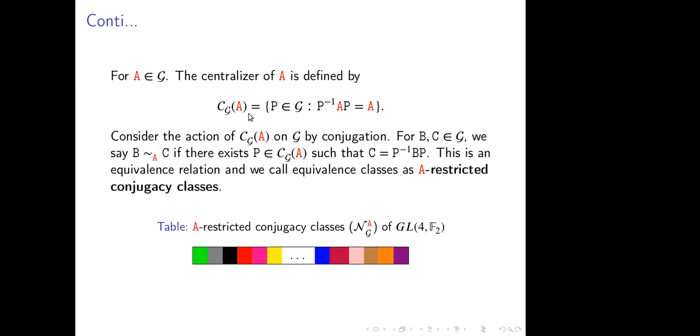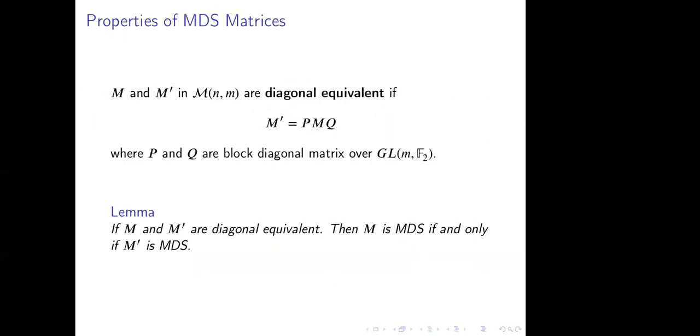Again what we have: we have a general linear group. It will be divided into A-restricted conjugacy classes. Therefore, we have different colors representing the distinct A-restricted conjugacy classes. We have a conjugacy class and restricted conjugacy class. We will use some properties of MDS matrices to reduce our search space.